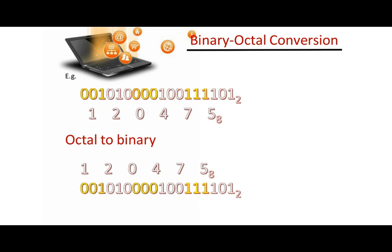For binary to octal conversion, since octal digits go up to 7 and 4+2+1=7, we group the binary number into groups of 3 from the right. Each group of 3 gives one octal digit. Grouping the binary number gives six groups: group values are 5, 7, 4, 0, 2, and 1. Combining from left to right gives the octal result 1204752. Octal to binary is just the reverse of this process.